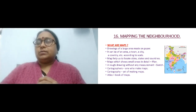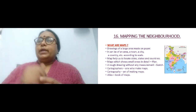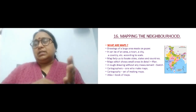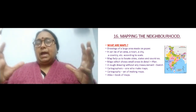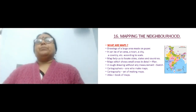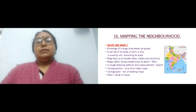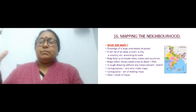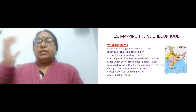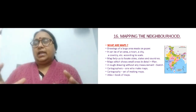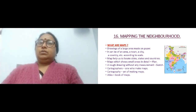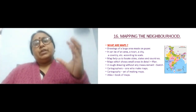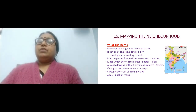Suppose you want to know how far your friend's place is from your house. Now we just search it on Google Maps, but earlier we used to depend on paper maps. All the symbols, landmarks, and the scale together help you to locate the city, state, or country properly and make it easy to find any place.